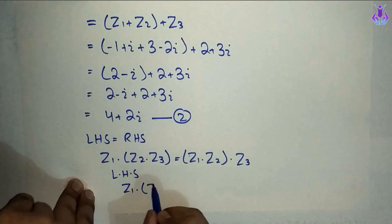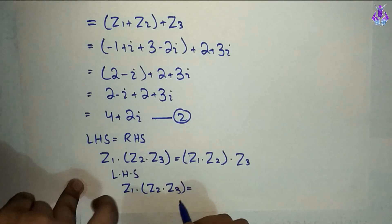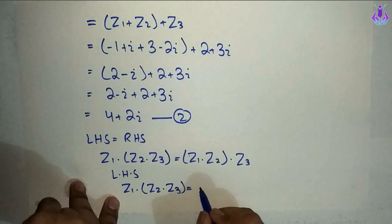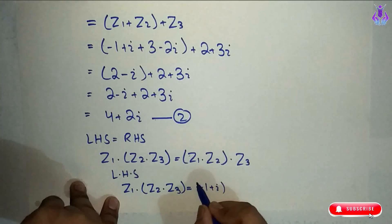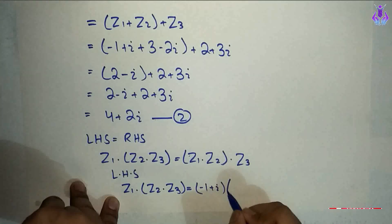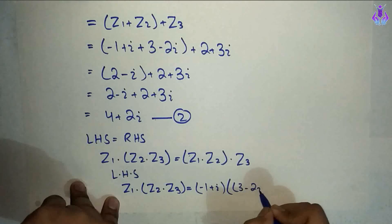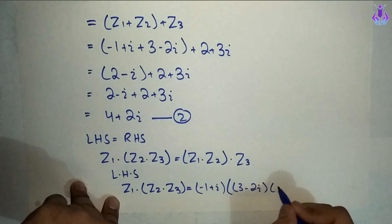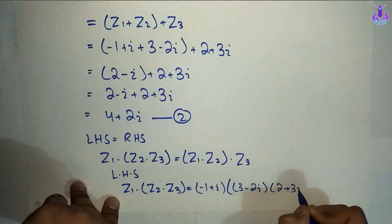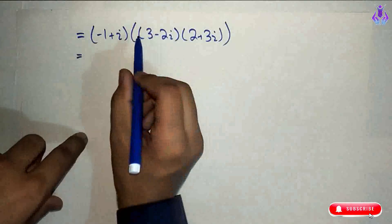Ab hum log left hand side lete hain. LHS: z1 multiply (z2 multiply z3) equals to. Z1 ki value minus 1 plus iota, z2 ki value 3 minus 2 iota, aur z3 ki value 2 plus 3 iota. Ab pehle bracket wali term ko solve karenge.